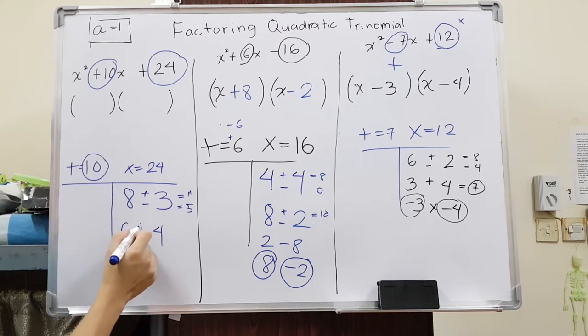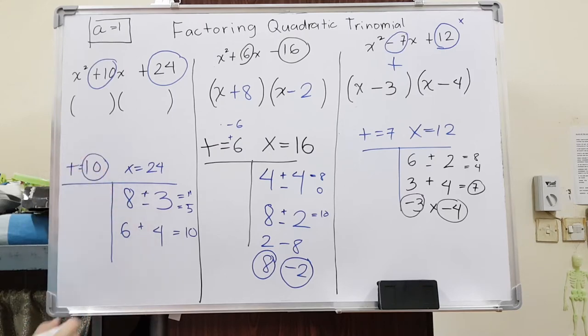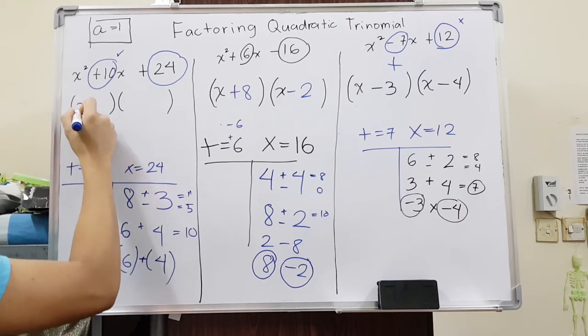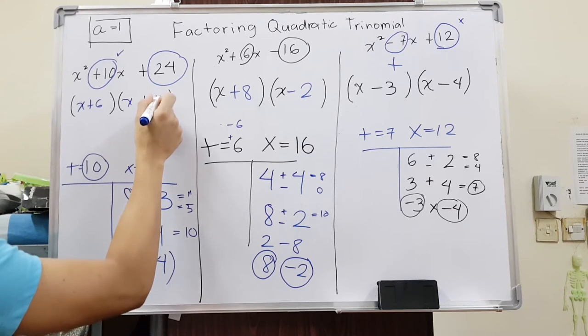6 plus 4 will give me 10, and I need 10 in here. So it means probably 6 and 4 would work. So all I have to do is to add them. 6 plus 4, I will get a positive 10, which is good because I need a positive 10. And then 6 times positive 4, if you multiply them, I will get positive 24. And it works. Therefore, x plus 6 and then x plus 4. And that is how you factor a quadratic trinomial when a is 1.